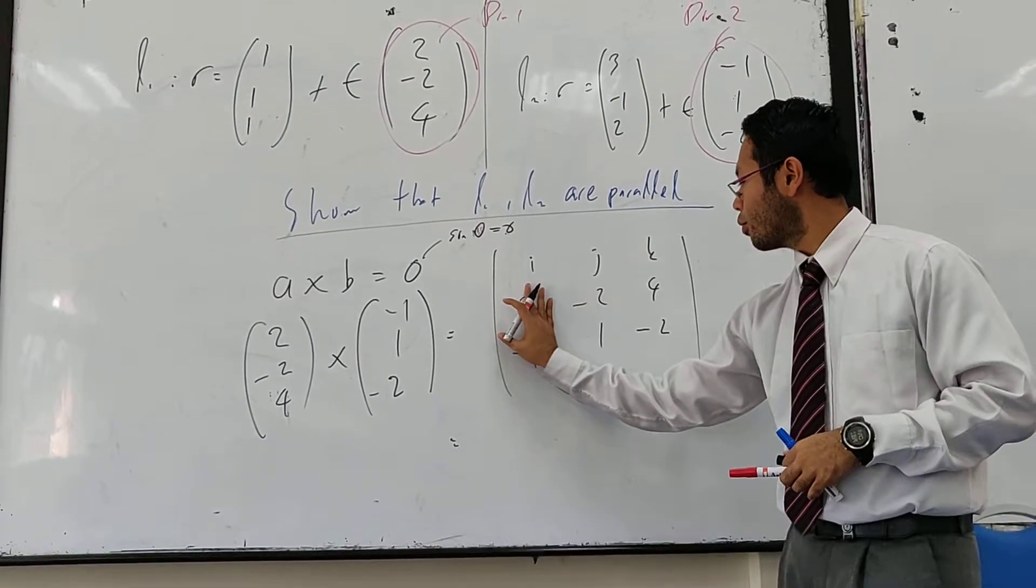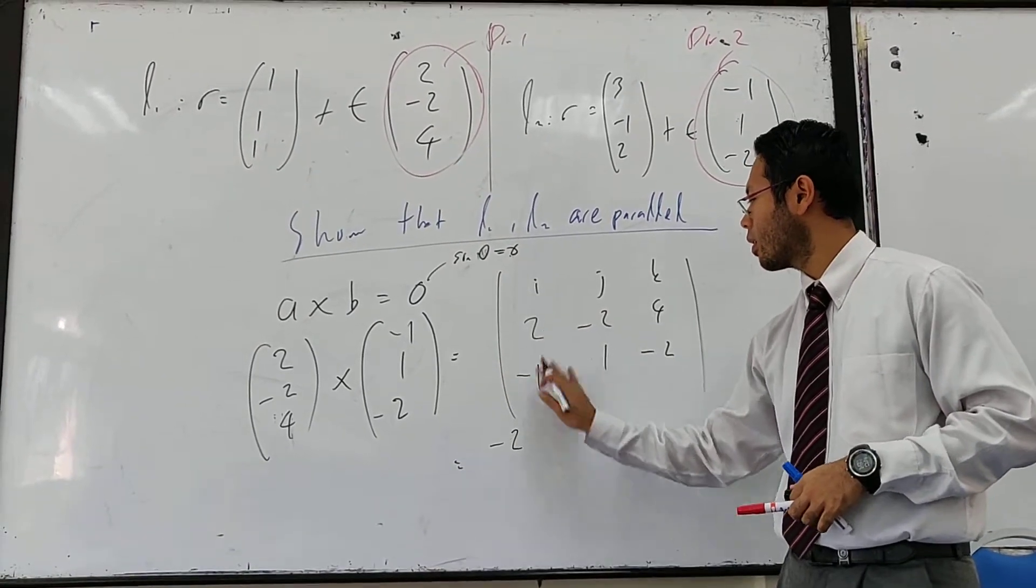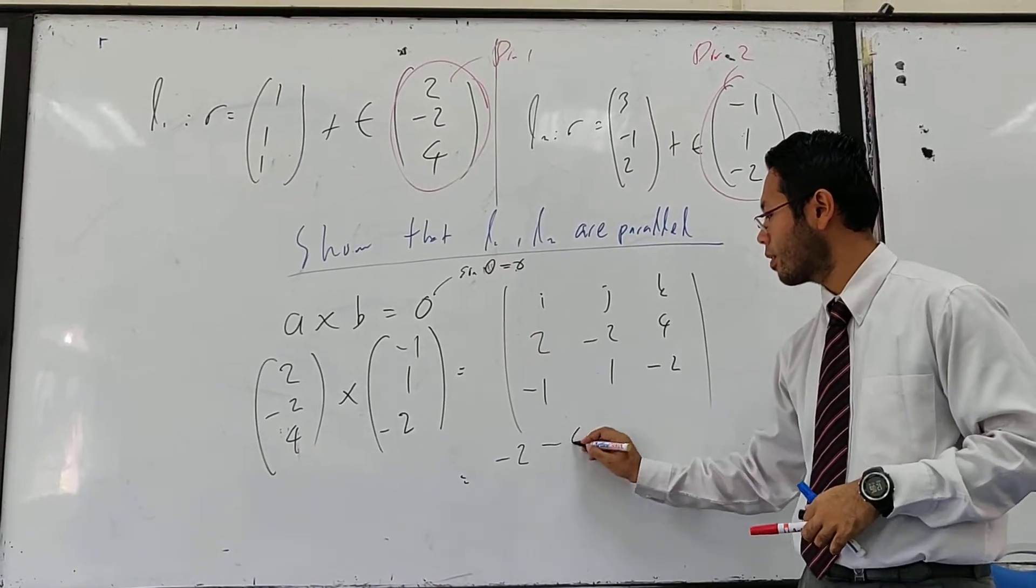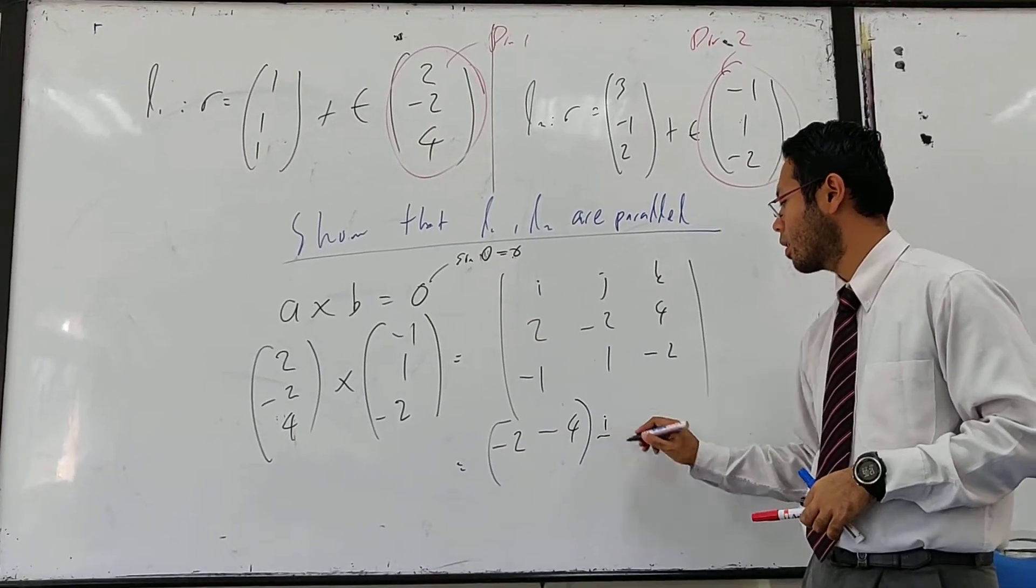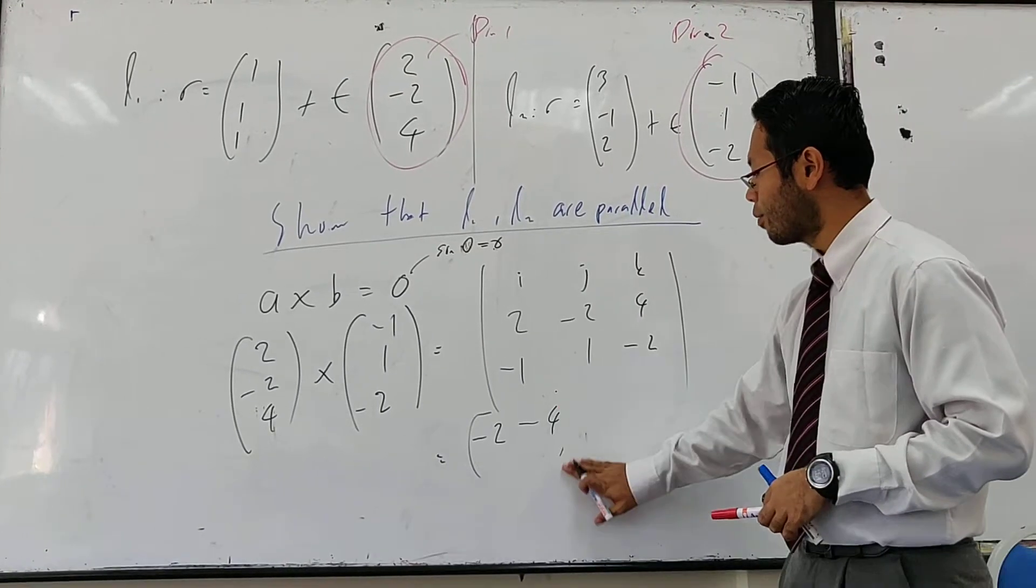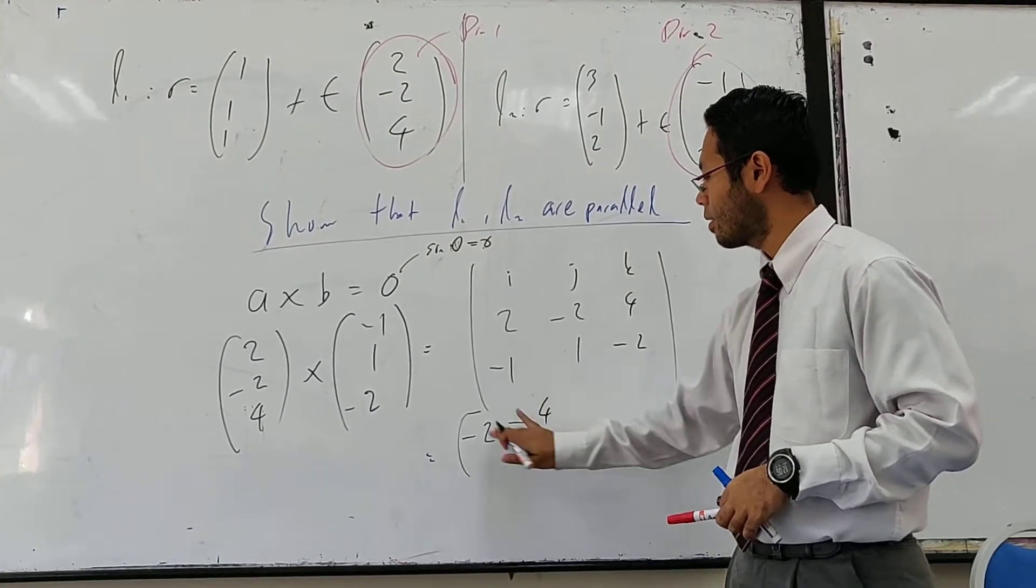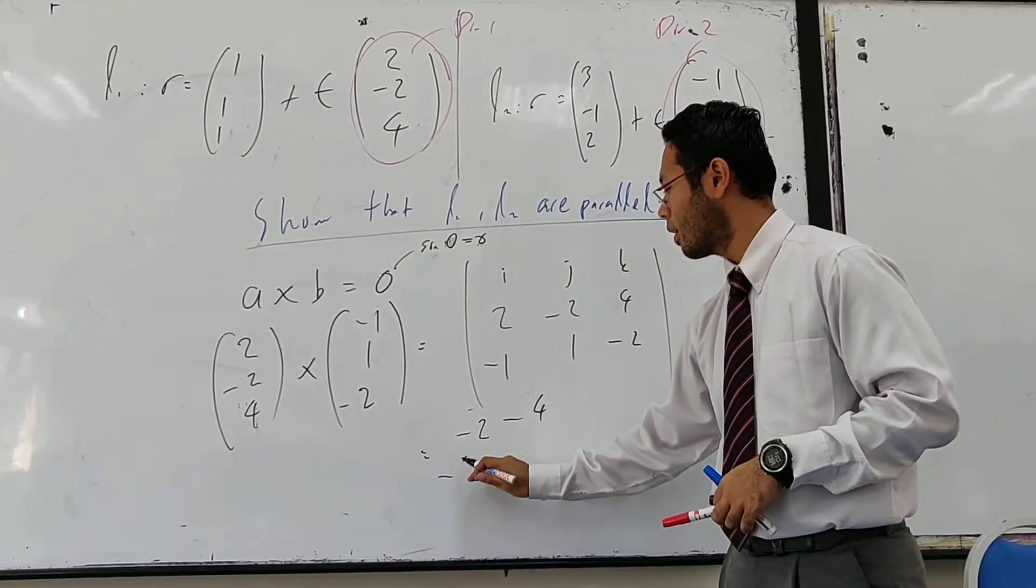So, negative two minus four. You can do that way without a problem. And then the next one.